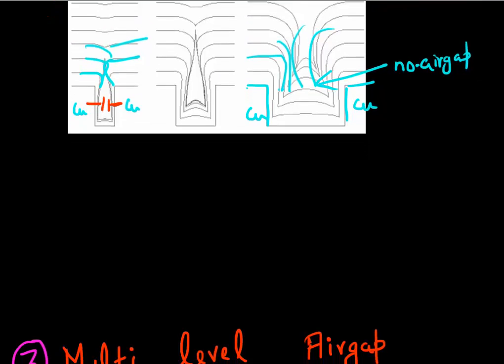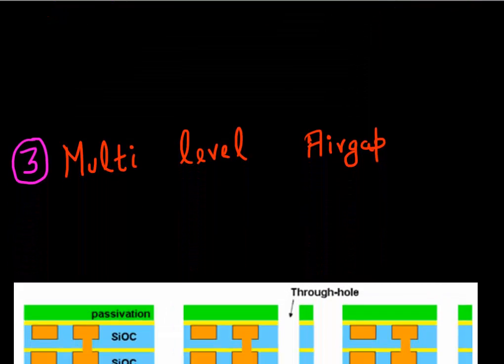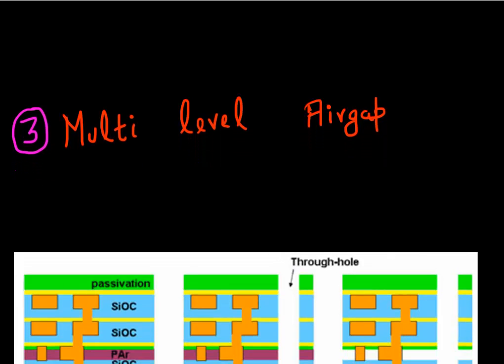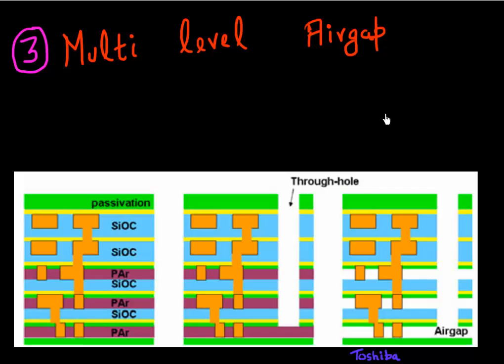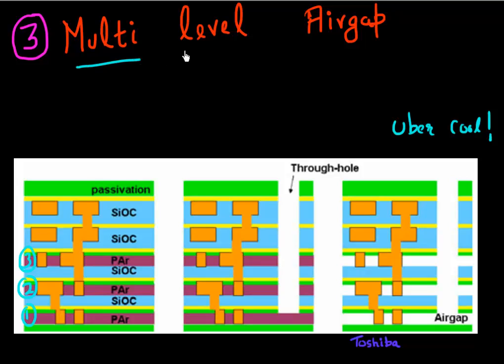To finish up, I want to just point out another approach. Since we talked about approach which was cool, we talked about approach which was super cool, and since we are talking about cool things, I consider this an approach which is uber cool. The way it works is in the other approaches you created this level of air gap at each level of interconnect. So if you had multiple levels of this interconnect, you would essentially create one air gap here, create another air gap here, create another air gap here, and each would require a separate process flow for creating this air gap. What this approach which was proposed by Toshiba does is it creates a multi-level air gap.